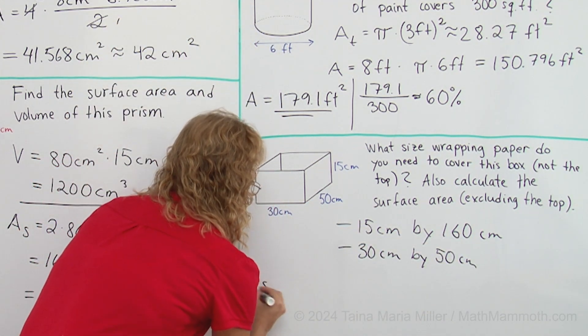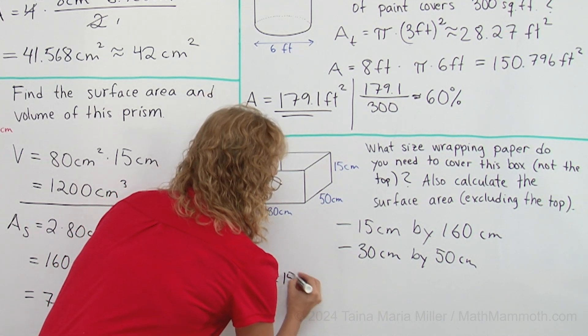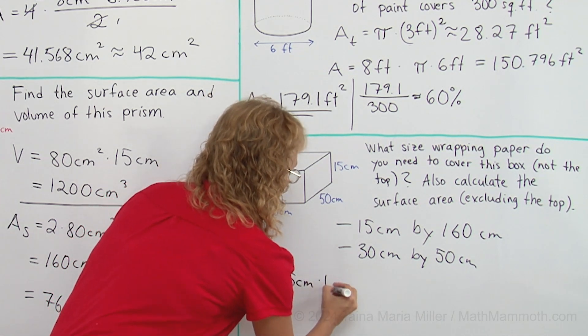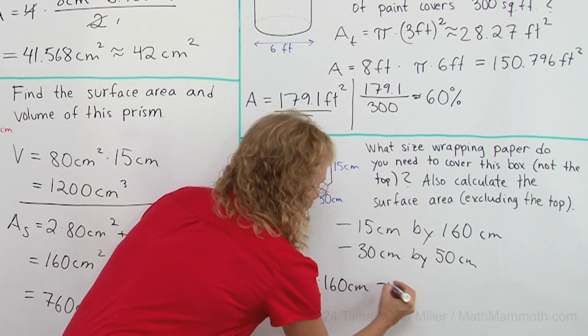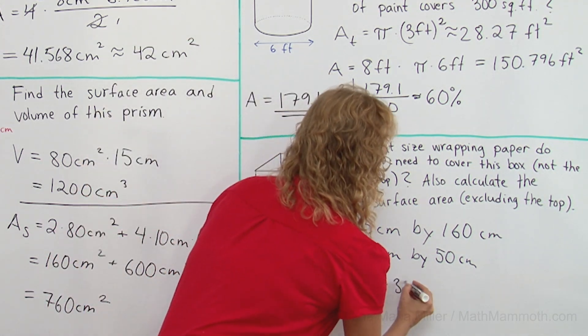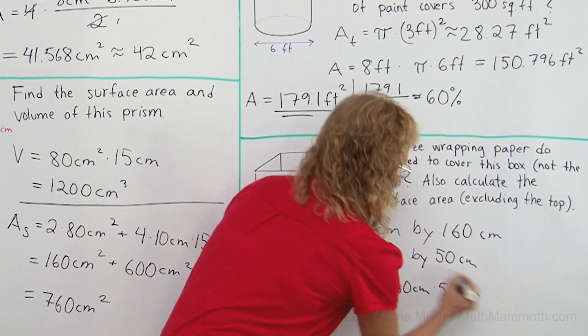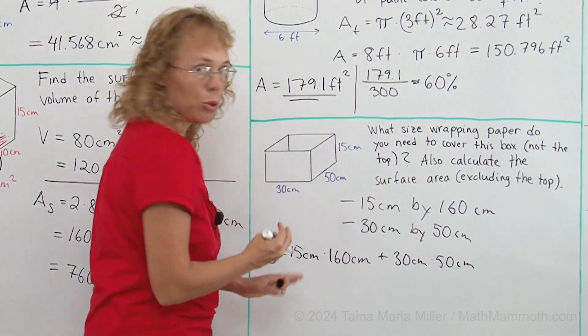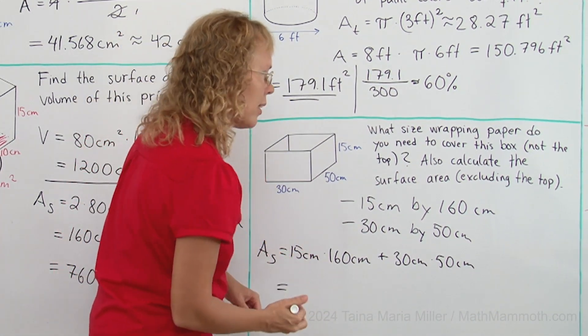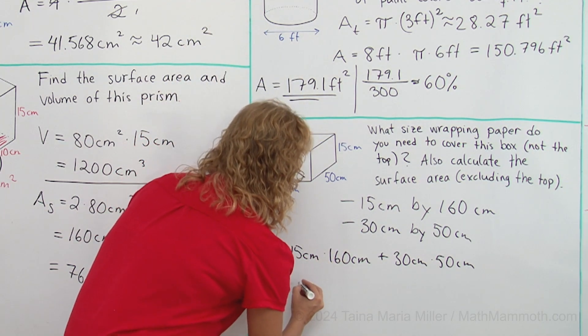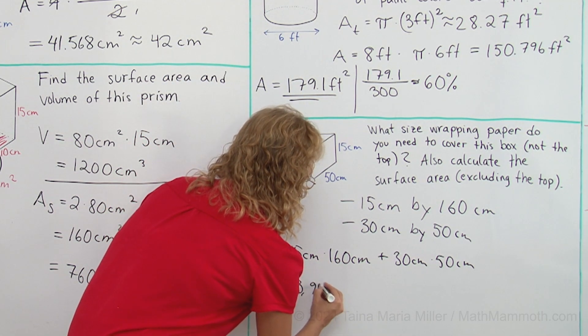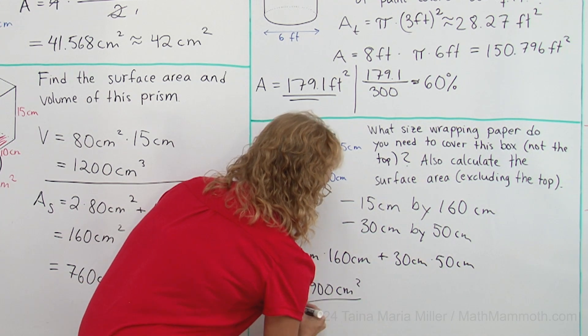Okay, surface area would be 15 centimeters times 160 centimeters plus 30 centimeters times 50 centimeters. Two rectangles added together. And from here we will get 3900 square centimeters.